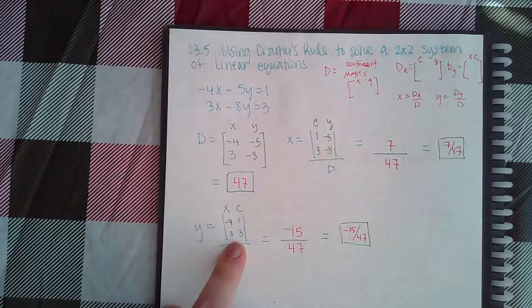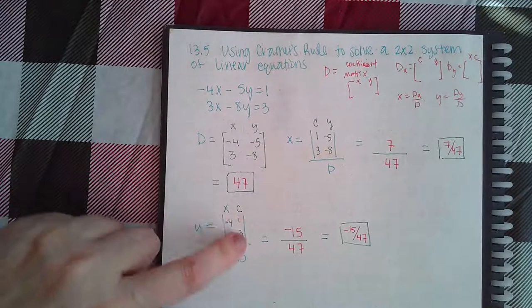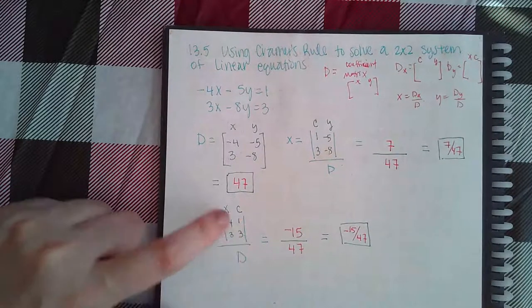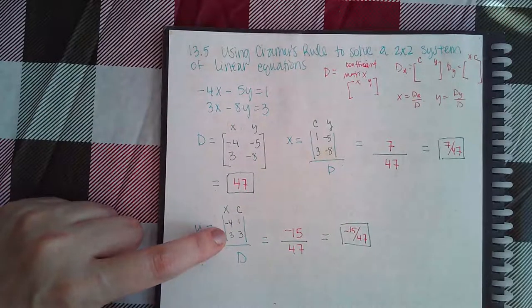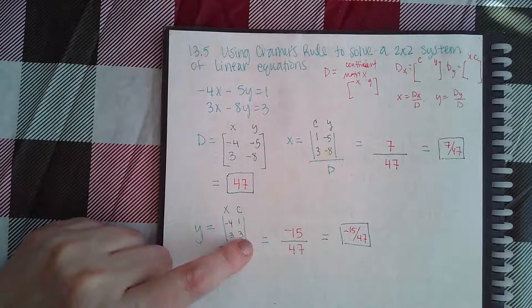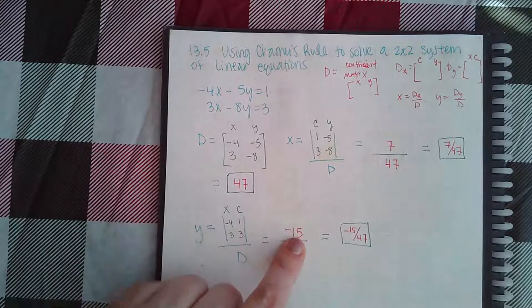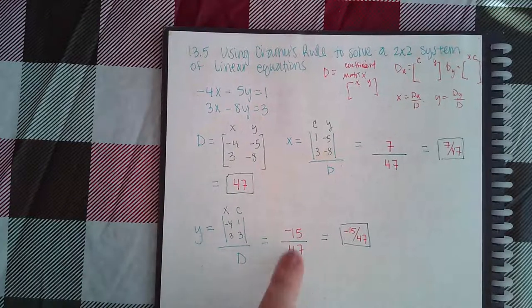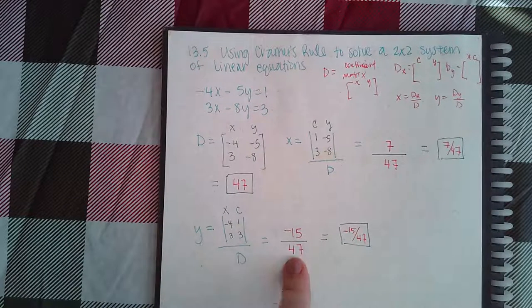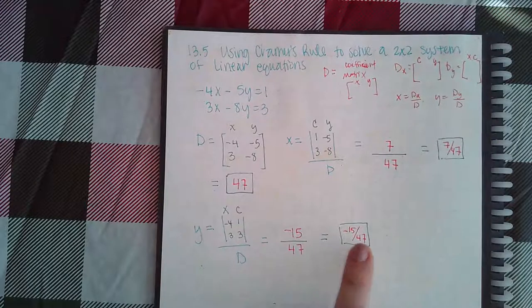For y, I need to put Dy here. So the y column will now have the constants, and the x column will stay the original as from the augmented matrix. So when I multiply this, I get negative 12 minus 3 is negative 15. D, we already know, is 47. If this can simplify, we would simplify it, but in my case, it doesn't simplify, so that's the answer for y.